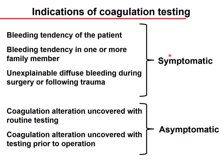For symptomatic cases, the patient may have some kind of bleeding tendency, or a family member had a problem with bleeding tendency, or there is unexplained diffuse bleeding during surgery or following trauma. The asymptomatic cases include coagulation alterations uncovered with a routine test or when testing prior to an operation.